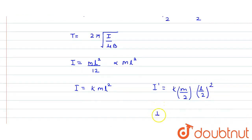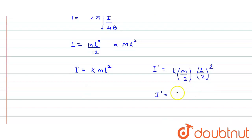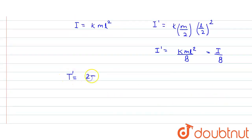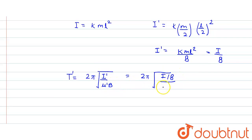Therefore I' = I/8, since k·mL² equals the initial moment of inertia I. Now the new time period is T' = 2π√(I' / μ'B) = 2π√((I/8) / (μ/2)·B) = 2π√(I / 4μB).